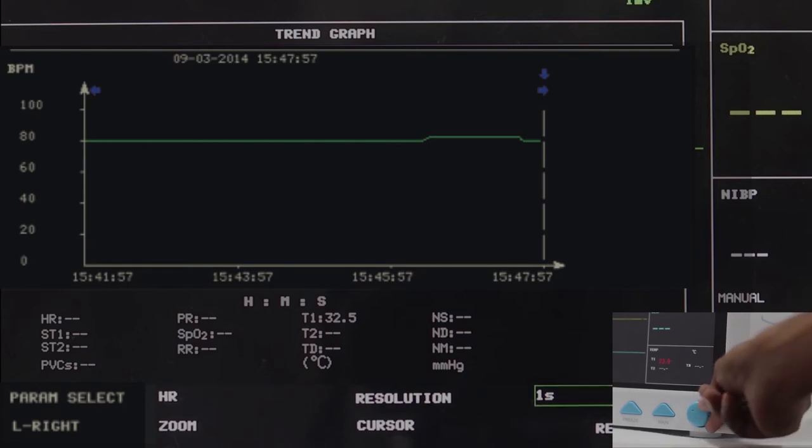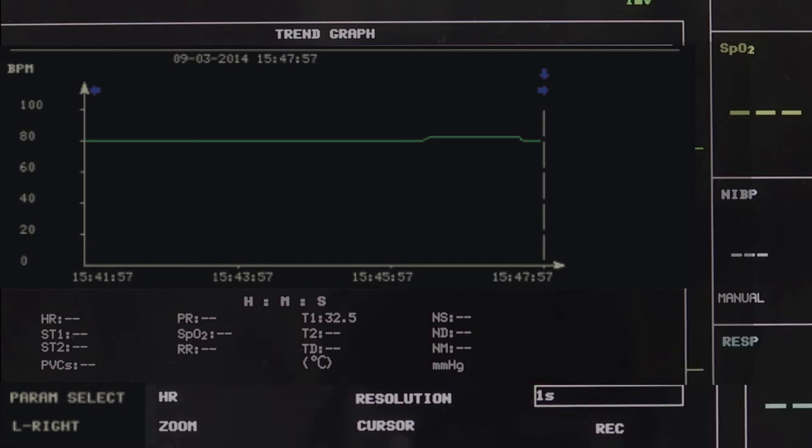To select 1 hour or 480 hour trend graph, pick resolution item. To view other trend curves, pick left to right item. Right side shows later trend curves. Left side shows earlier trend curves. To change the display scale, pick the zoom button. To print out the trend curve, press record button.